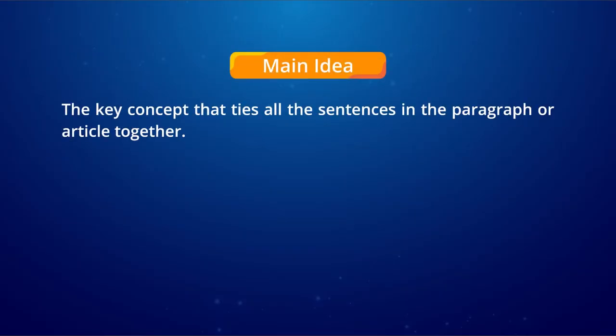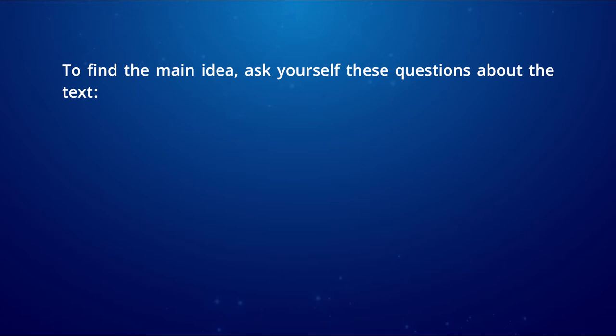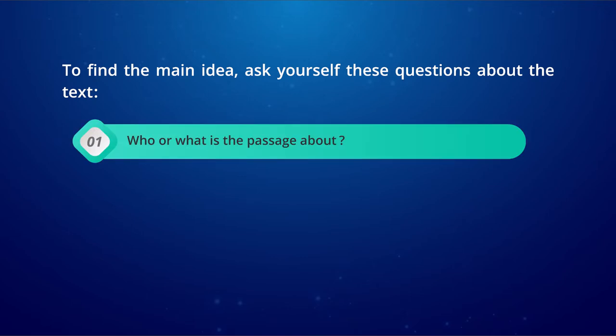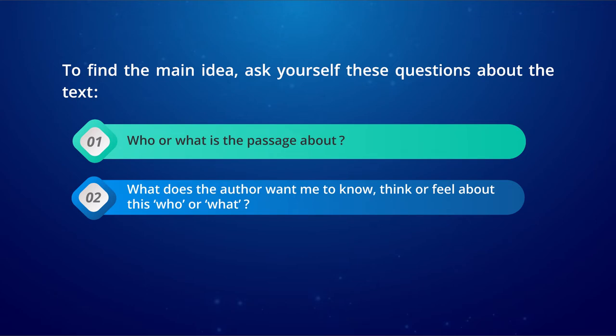What do we mean by 'main idea'? The main idea is the key concept that ties all the sentences in the paragraph or article together. Finding the main idea is key to understanding what you read — once you identify it, everything else in the reading should fall into place. To find the main idea, ask yourself: Who or what is the passage about? What does the author want me to know, think, or feel? If I had to describe this passage in one sentence, what would I say?